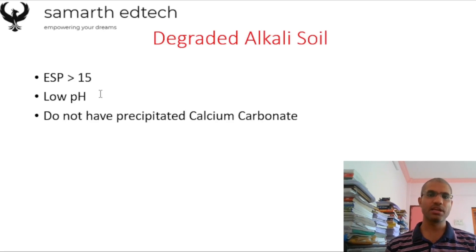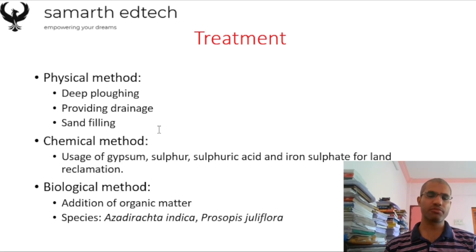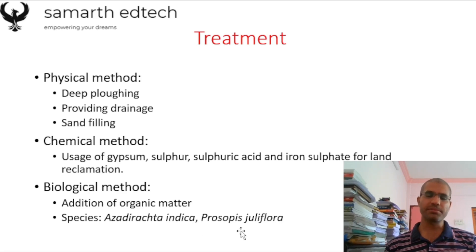Degraded alkali soil has ESP greater than 15, low pH, and no precipitated calcium carbonate. Treatment of salt-affected soils uses three methods: physical (deep ploughing, proper drainage, sand filling for better infiltration); chemical (gypsum, sulfur, sulfuric acid, and iron sulfate for reclamation); and biological (addition of organic matter and tree species like Azadirachta indica and Prosopis juliflora).